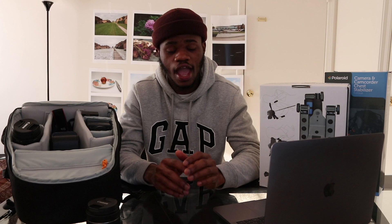The frame rate also varies across different sizes. We have 30 or 60 frames per second, 25 or 50 frames per second, and 24 frames per second. The Canon 6D delivers very nice image quality, which is fundamental to its type and range as a camera.